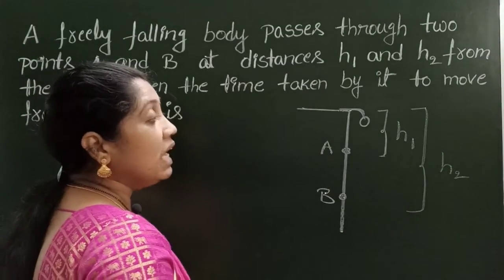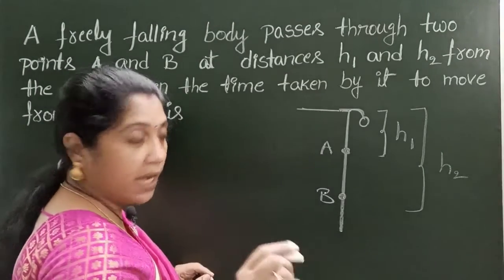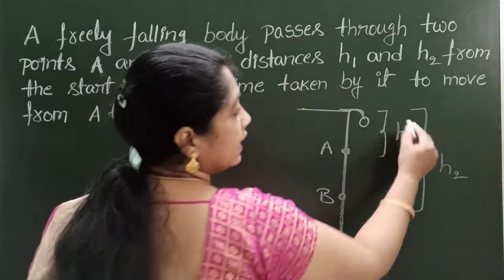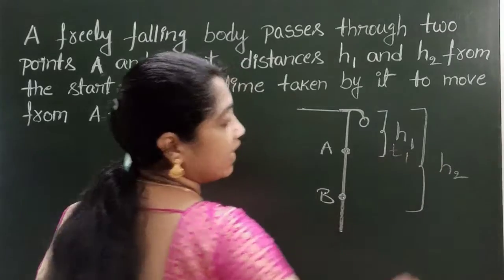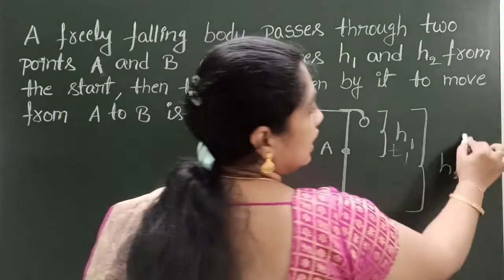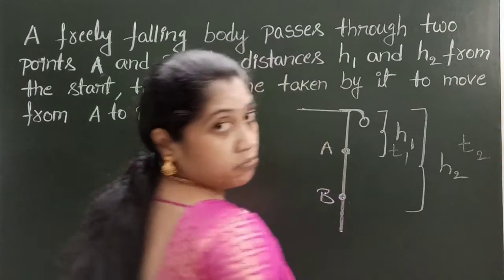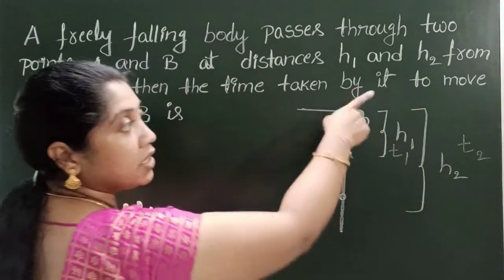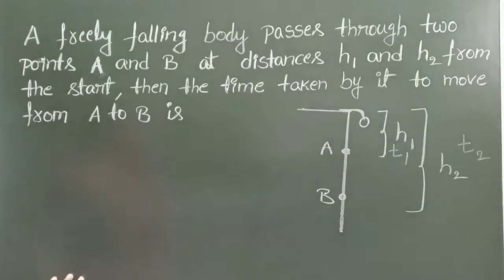So first, let the time taken to reach from start to point A be T1 and from start to point B let the time be T2. So the difference of these two, T2 minus T1, gives the required time here.